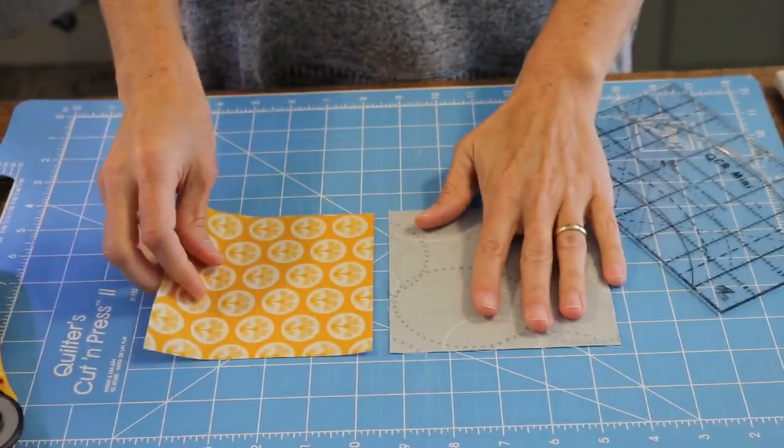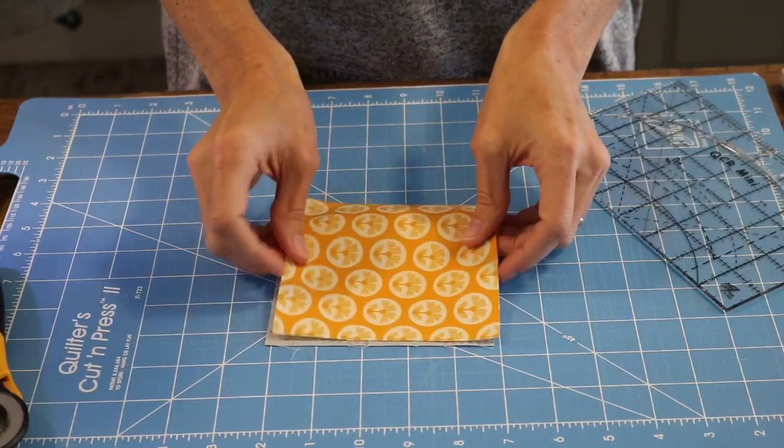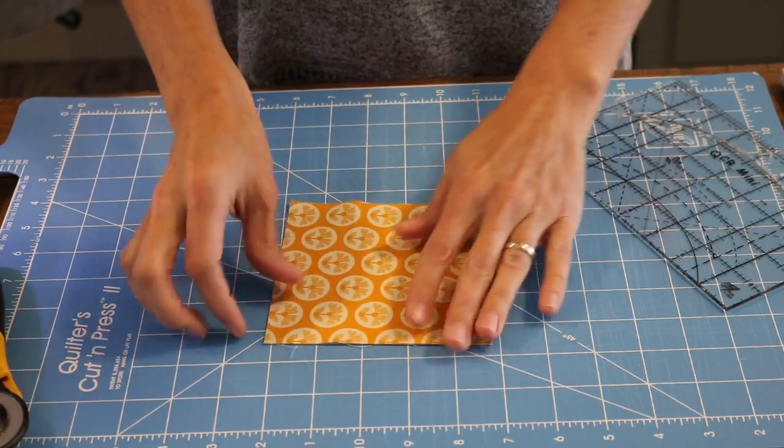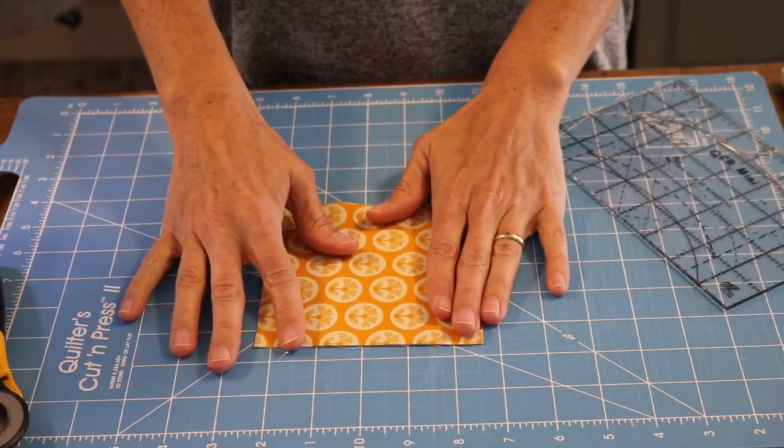Okay, so I have two five-inch squares and I'm going to stack them on top of each other. They can be right sides up, right sides down facing, it doesn't matter for this block.